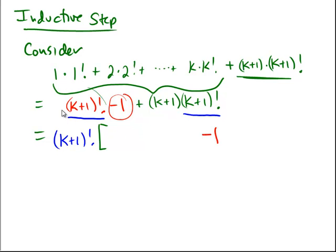And what do we have left when we pulled out the k plus 1 factorial from the other pieces? Well, from here, k plus 1 factorial leaves us with 1. The minus 1 was moved over to the end over here. So we have a plus. And then we have a k plus 1 times k plus 1 factorial. But I factored out the k plus 1 factorial. So I really just have a k plus 1.